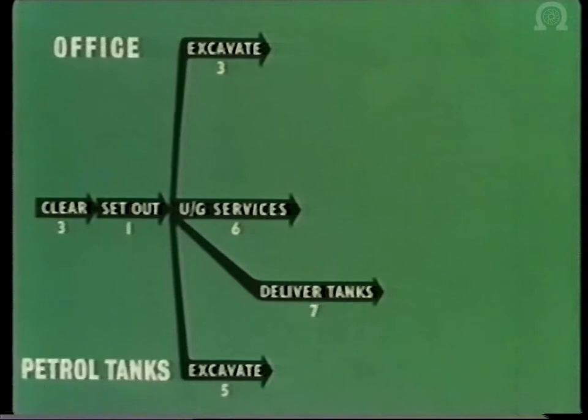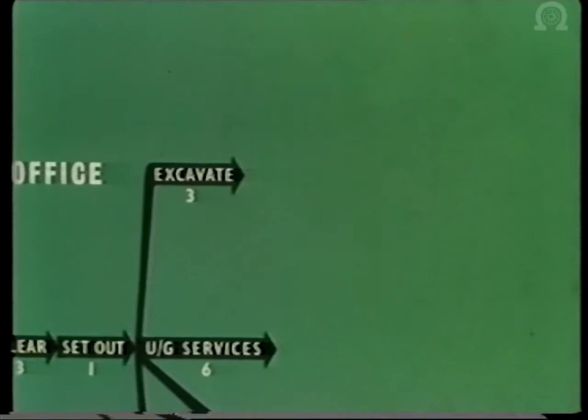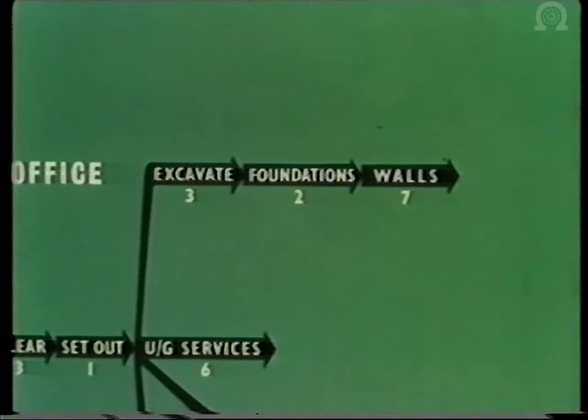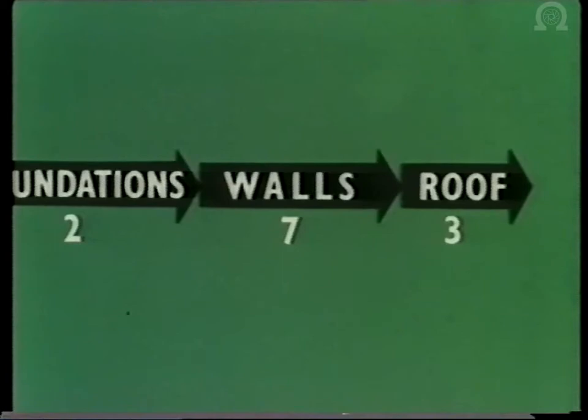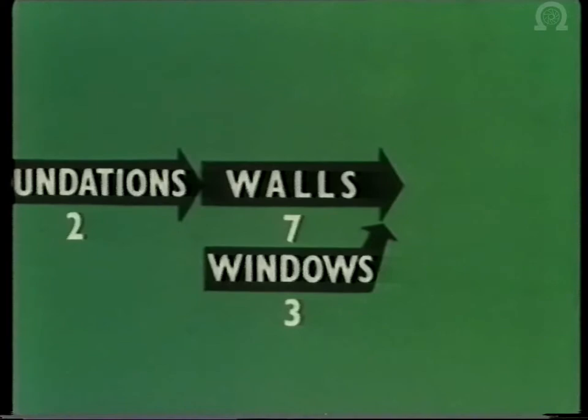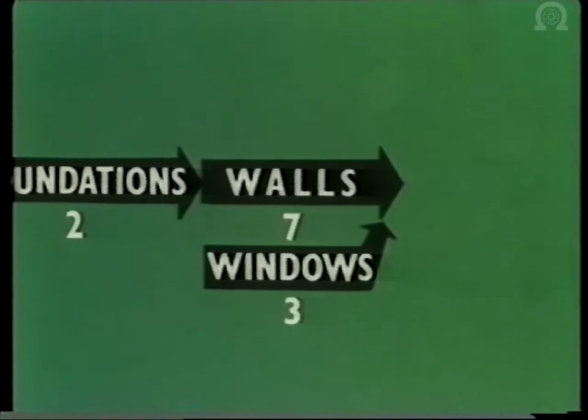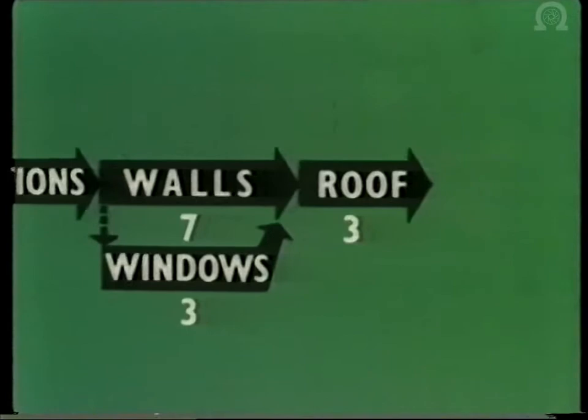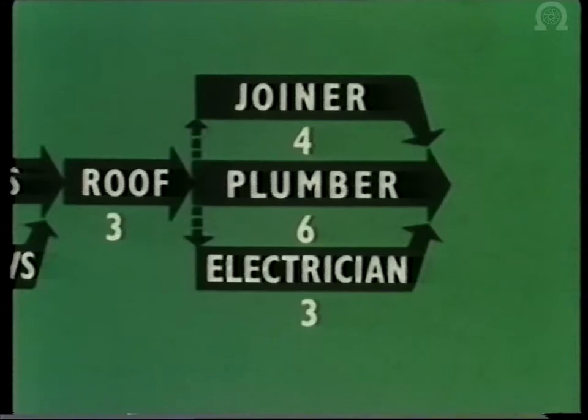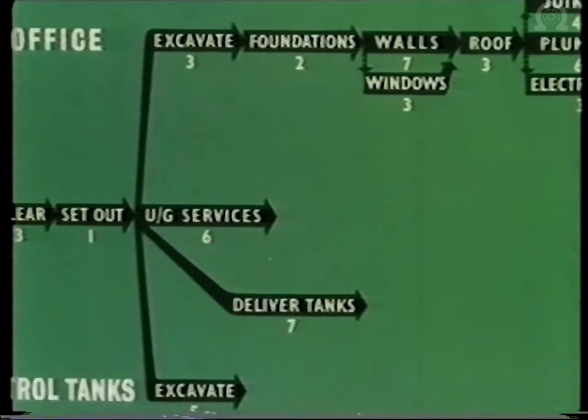Concentrate on the office building for a moment. After the excavation, the foundations are concreted, then the walls and the roof. But before the roof is started, the window frames should be in. They must be done at the same time as the walls, but they cannot be started until the foundations are finished. A broken arrow, called a dummy, links the two starting points. When the roof is on, the plumber, electrician and the joiners can all start work together. But the plumber cannot begin until the underground services such as drains have been completed. So, to maintain the planning logic, another dummy arrow is drawn in.